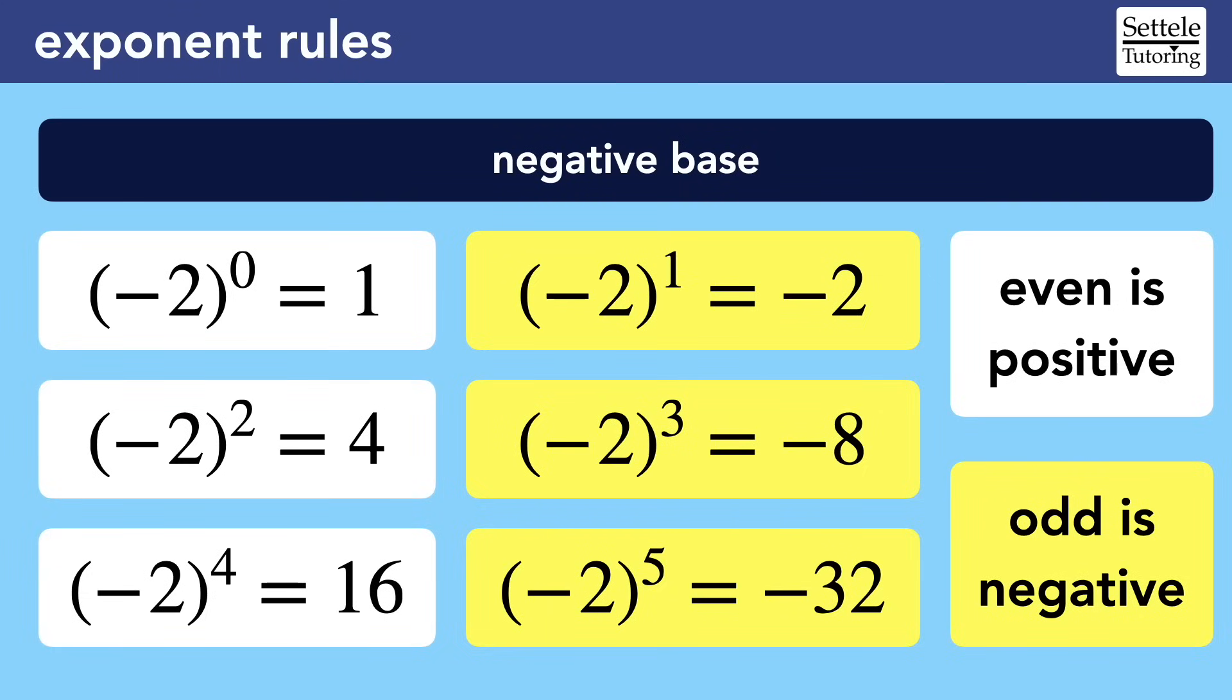On the right, we see that negative bases raised to odd-numbered exponents will have a negative result. This happens because of the fact that two negative numbers multiplied together will have a positive product. Even exponents will always pair up our bases evenly, so all of the negatives will cancel out. Odd exponents will always leave one extra negative 2 that makes the entire result negative. The behavior of negative bases is fairly easy to remember if you understand that exponents are a shorthand for multiplication.